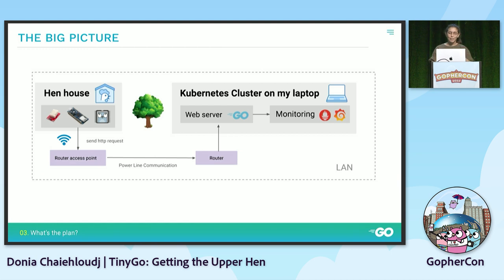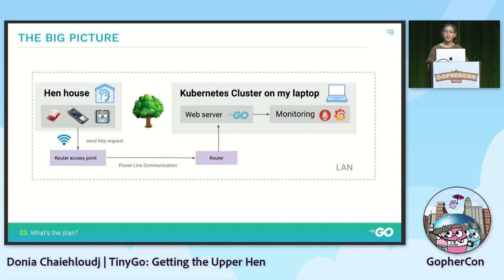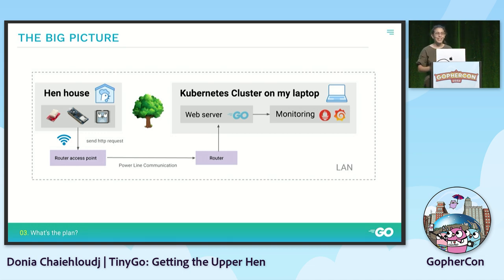In the big picture: on one side I have my henhouse with the Arduino running a program written in Go and built with TinyGo, sending temperature and humidity measures through HTTP. On the other side, I have my laptop at home with a Kubernetes cluster, a web server written in Go, and a monitoring layer to scrape metrics and build dashboards. The two parts communicate through Wi-Fi. When I moved the Arduino to the henhouse at the back of the yard, it lost signal, so I had to add a router access point with a long cable along the garden.